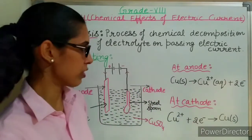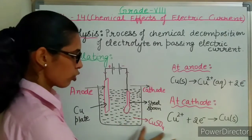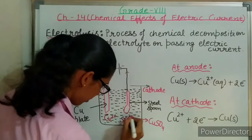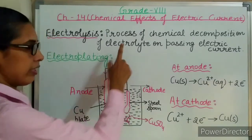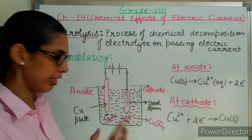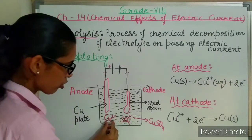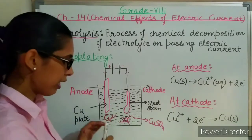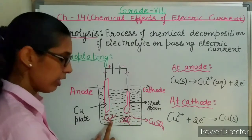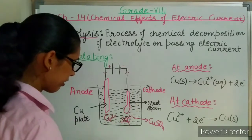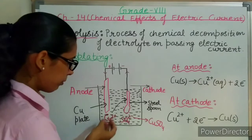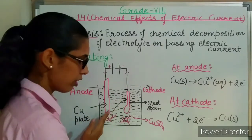Let us understand how this process took place — how the copper got coated on the steel spoon. When electricity passes through the copper sulphate solution, it will dissociate into copper ions and sulphate ions. There will be many copper ions and sulphate ions in the solution. The copper ions have a positive charge, so they will get attracted to the cathode and copper will get deposited on the steel spoon. All the copper ions from the solution will start depositing on the steel spoon.